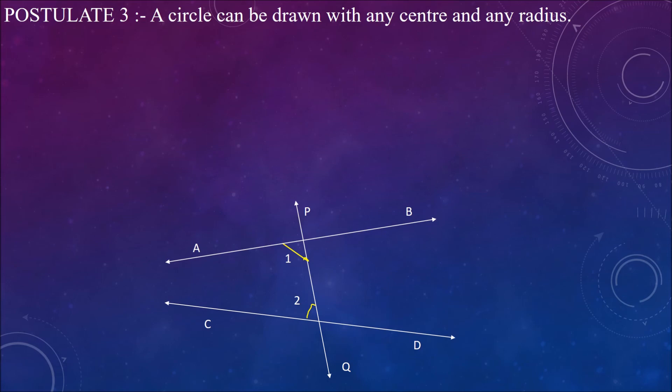Now let us learn the fourth postulate. It states that all right angles are equal to one another. Now comes the fifth postulate, the most important postulate of Euclid's geometry.